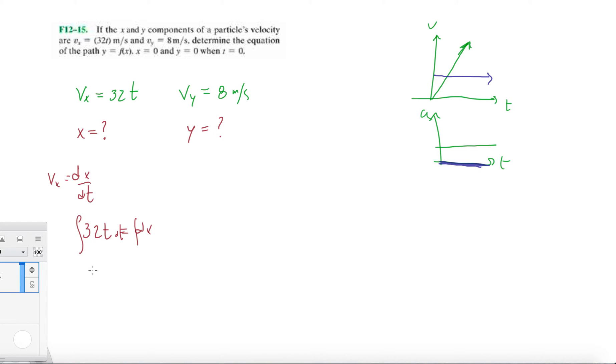So 32... integrate this once. 32t squared over 2 equals x, which is also equals 16t squared.